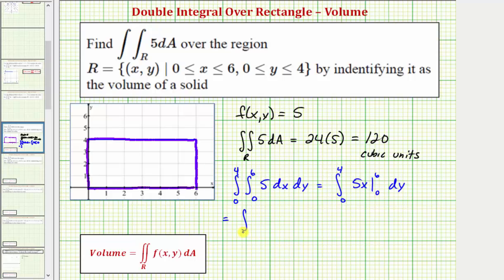So we have the integral from zero to four of five times six minus five times zero, which would give us the integral from zero to four of 30 minus zero, or 30.